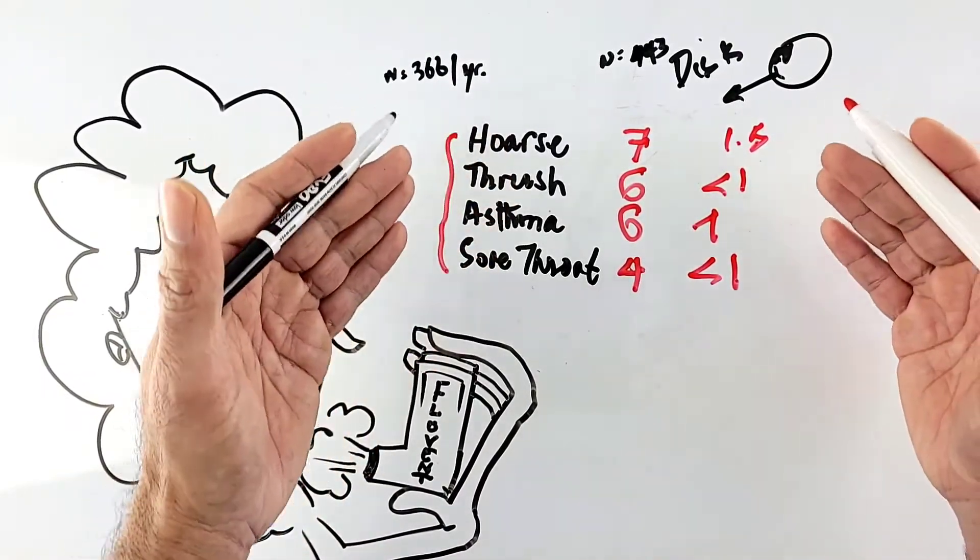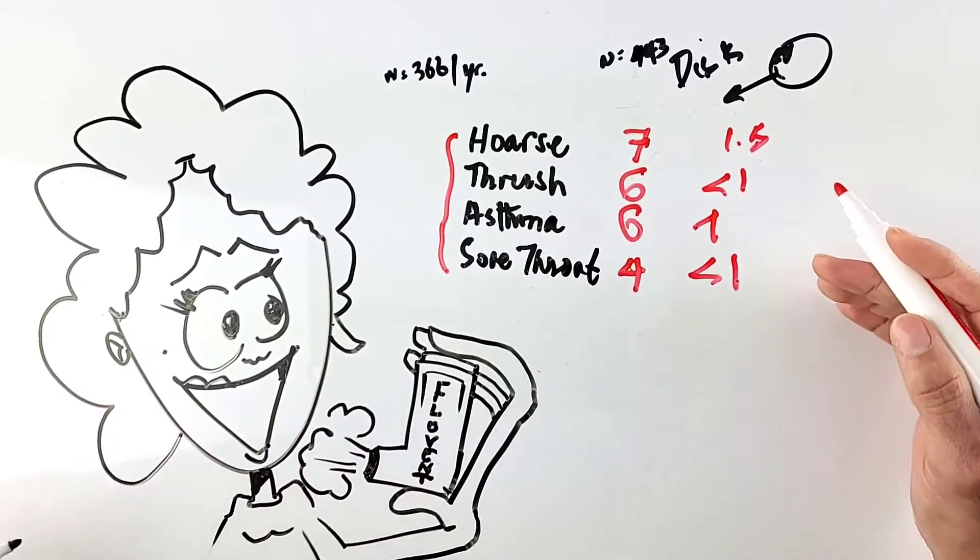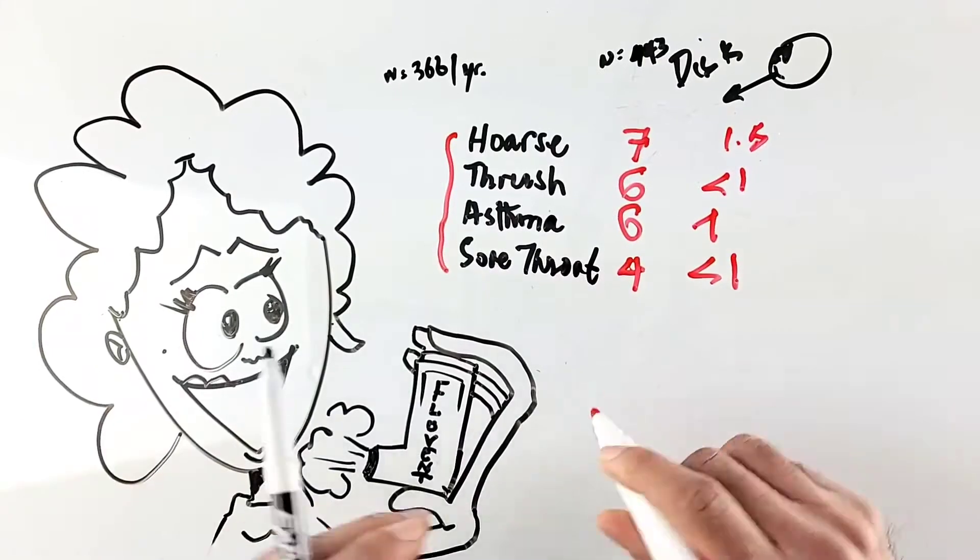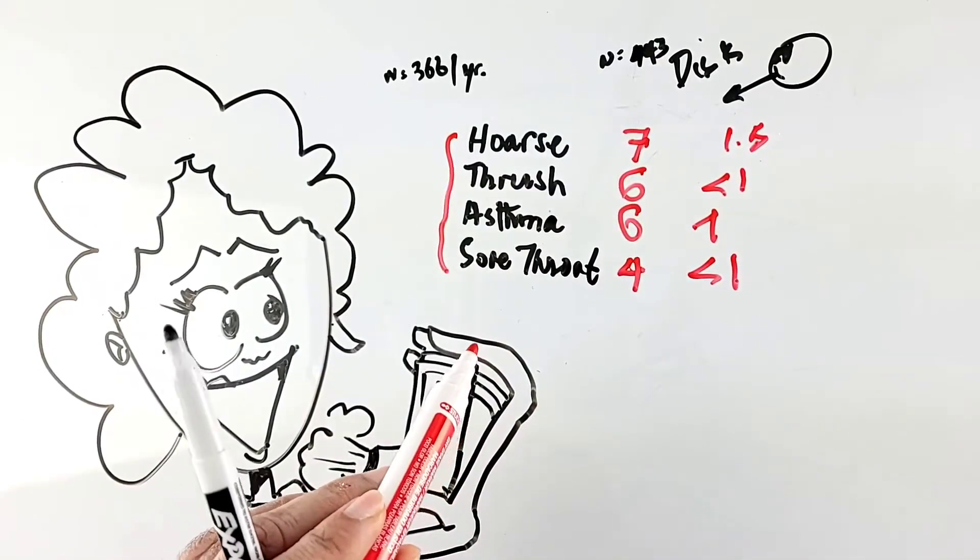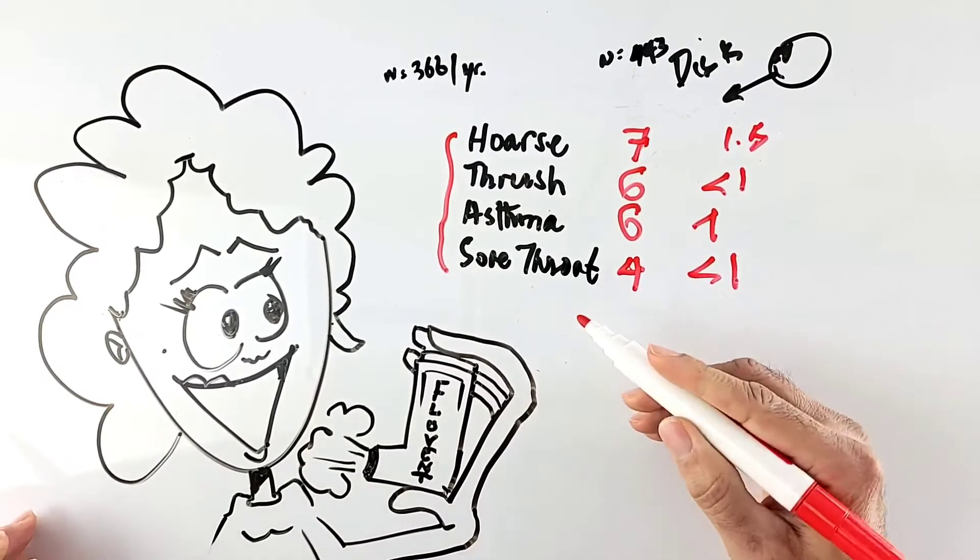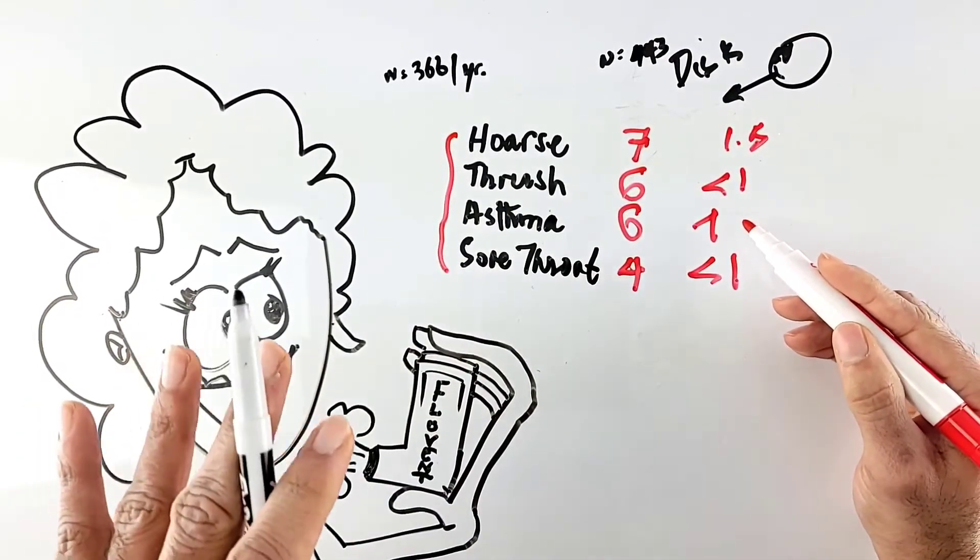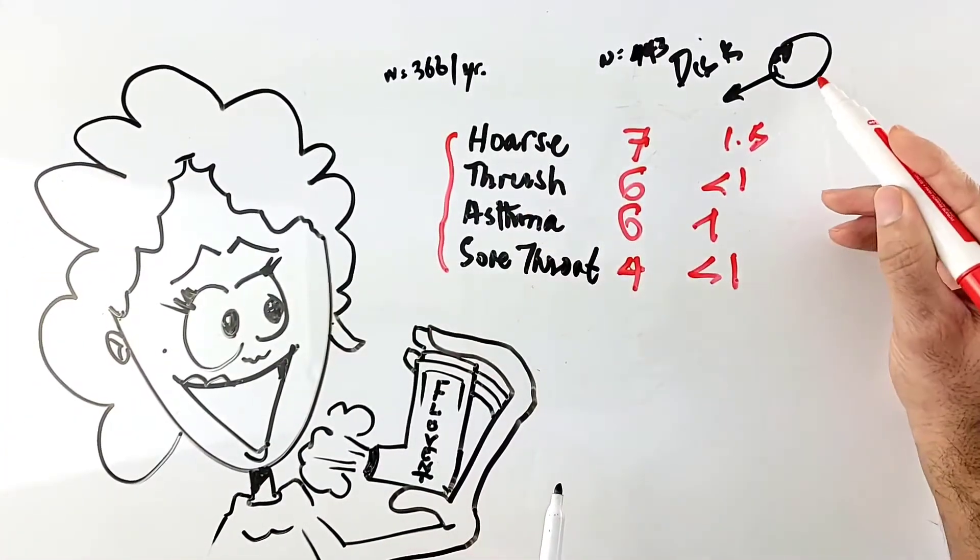So it turns out it's not the fluticasone that's causing this airway irritation - it's actually the propellant in the puffer, inside of the pumps. So if you're on a pump and you notice that since you started it you're actually getting more asthma than before you began it, you might want to talk to your doctor about this effect. Because the simple solution is actually not to increase the dose or take more - you may actually need to switch from the pump to the disc.